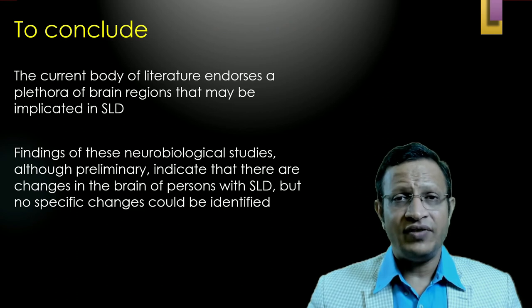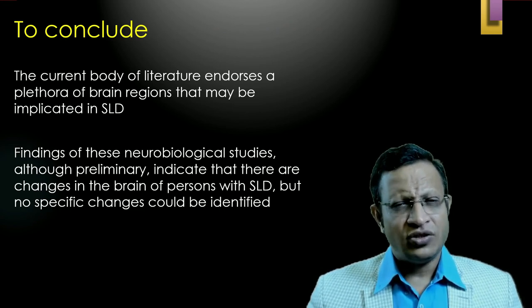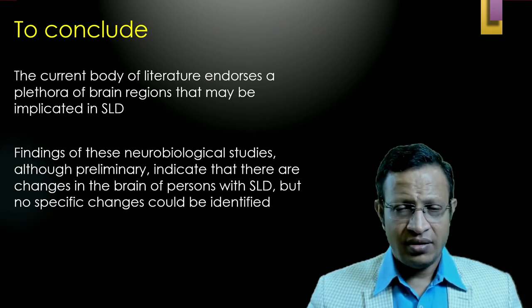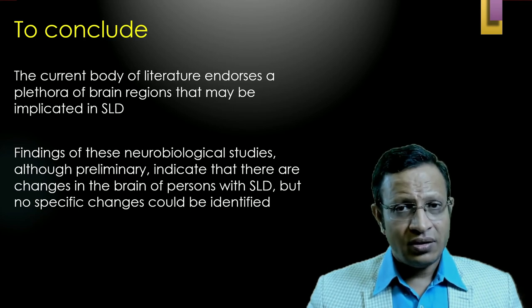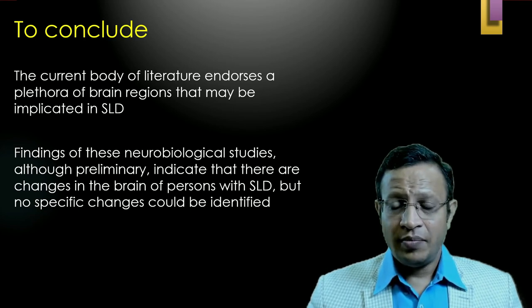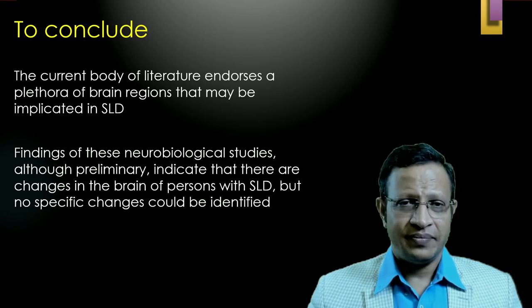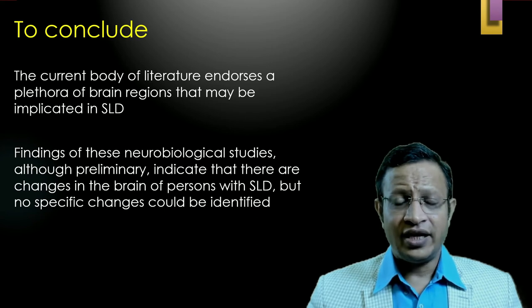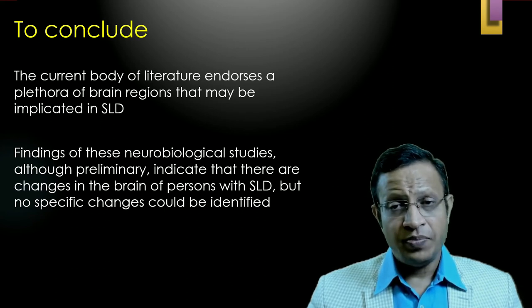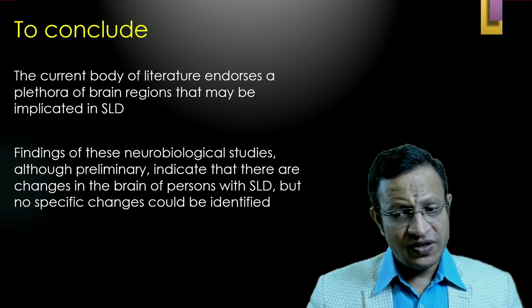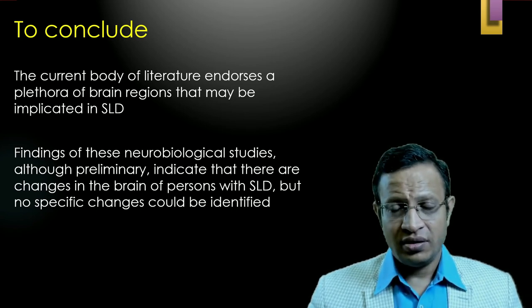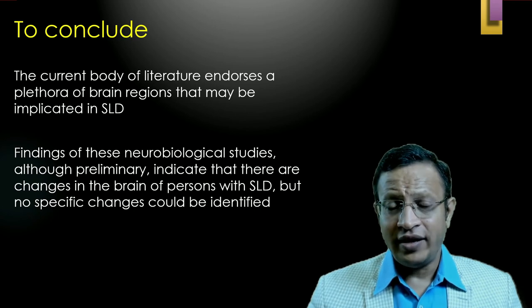To conclude, the current body of literature endorses a plethora of brain regions implicated in SLD — meaning SLD does not come out of nothing; there are brain problems the children are suffering from. They are not the culprits — it is the brain problem resulting in SLD. At present, findings of neurological studies, although preliminary, indicate there are brain changes in persons with SLD. No specific areas have been definitively implicated at this point, but future research may throw light on SLD.